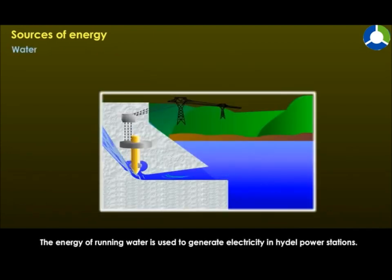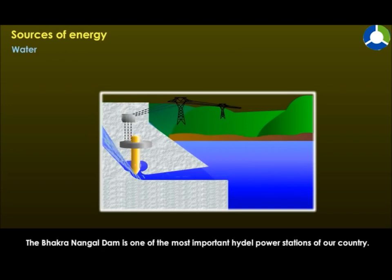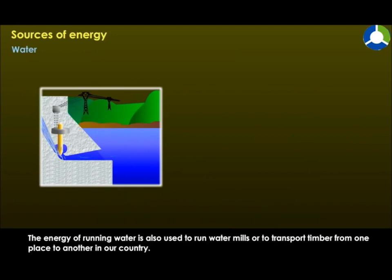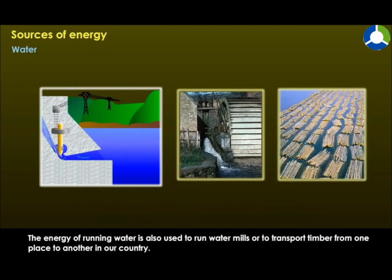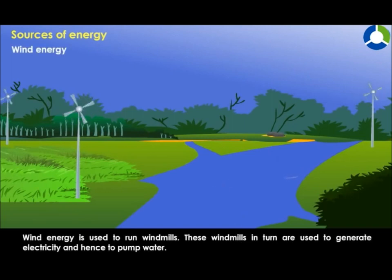Water: the energy of running water is used to generate electricity in hydel power stations. The Bhakra Nangal dam is one of the most important hydel power stations of our country. The energy of running water is also used to run water mills or to transport timber from one place to another.